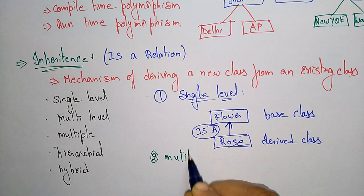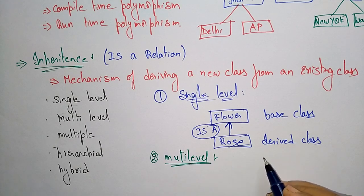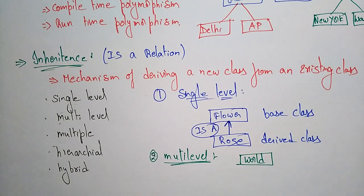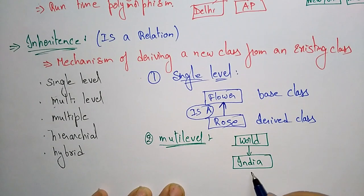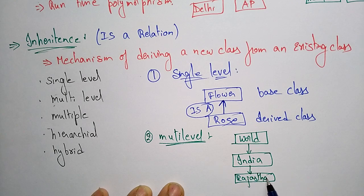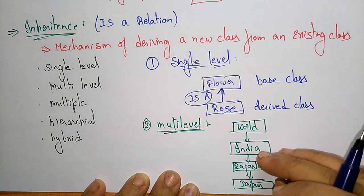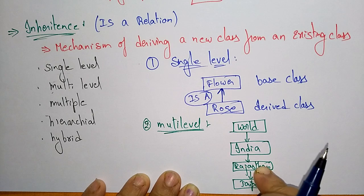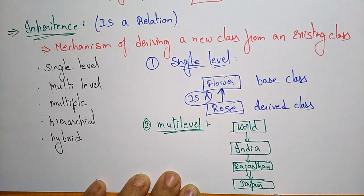Now coming to the next level, that is multi-level inheritance. For example, take the world as the base class. From the world, India is derived. Inside India you have Rajasthan, and inside Rajasthan you have Jaipur. So this is multi-level — each class is derived from the previous one in a chain.